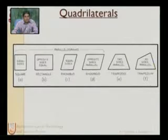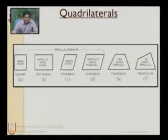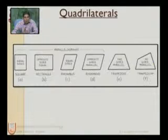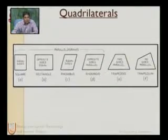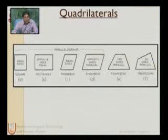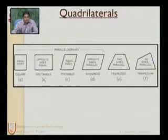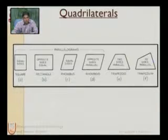The next is a rhomboid. A rhombus has all sides of equal length. In a rhomboid, there are two pairs of equal sides and two sets of equal angles.